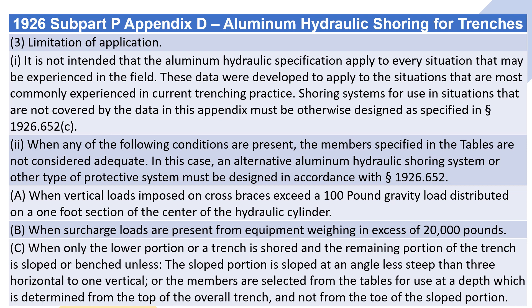3. Limitation of application. These data were developed to apply to the situations that are most commonly experienced in current trenching practice. Shoring systems for use in situations that are not covered by the data in this appendix must be otherwise designed as specified in section 1926.652 C.2. When any of the following conditions are present, the members specified in the tables are not considered adequate. In this case, an alternative aluminum hydraulic shoring system or other type of protective system must be designed in accordance with section 1926.652.